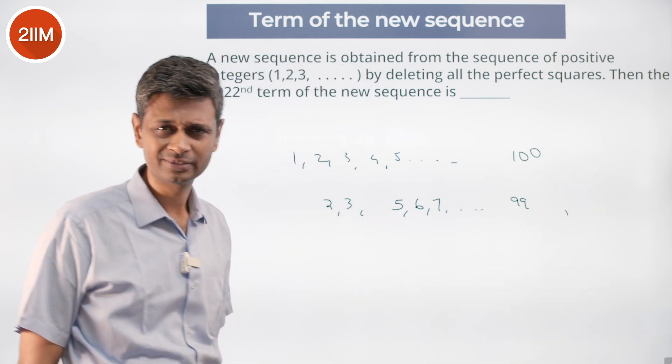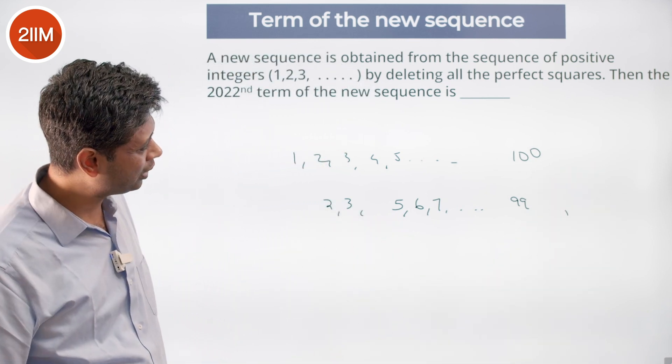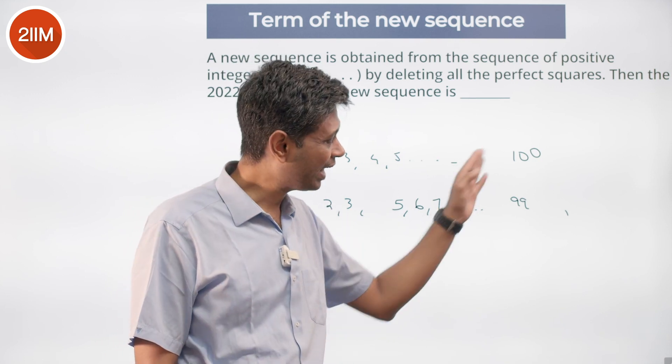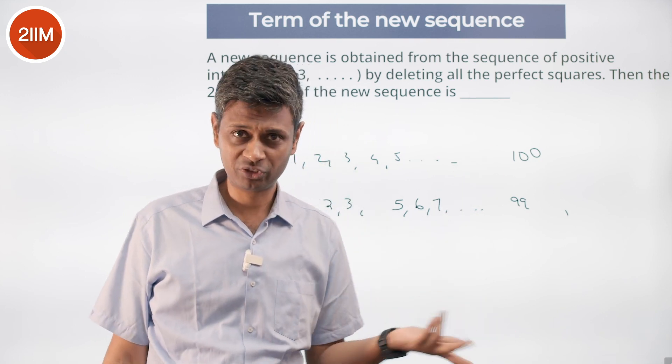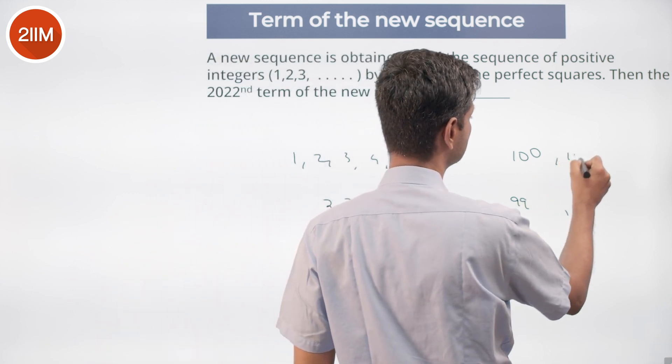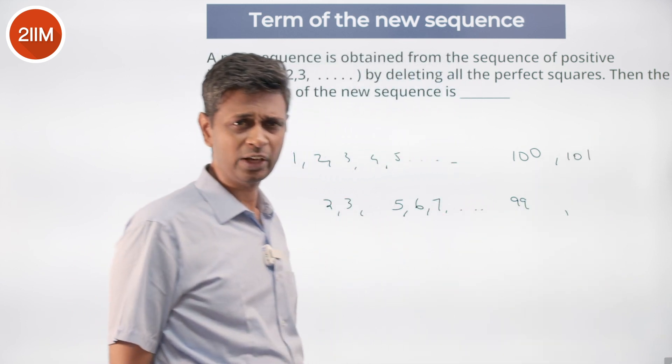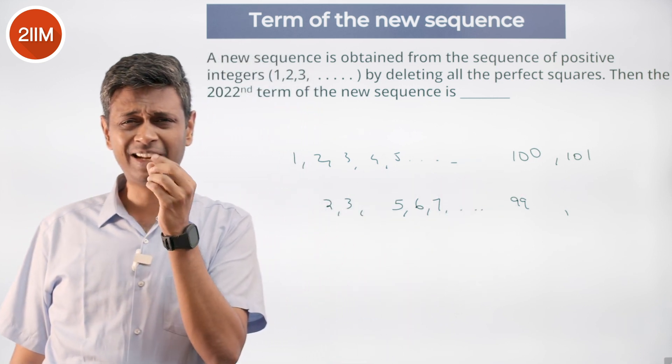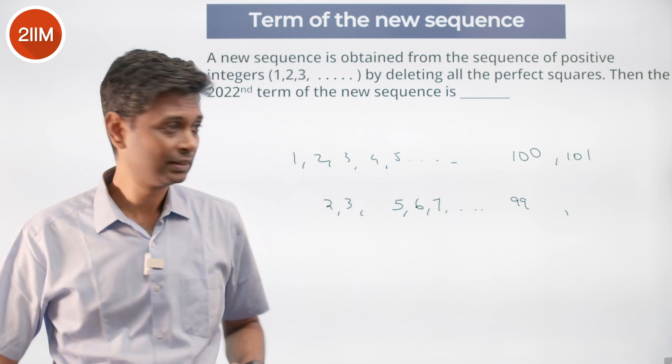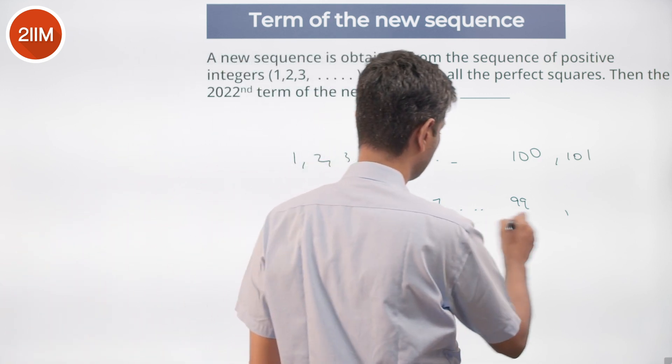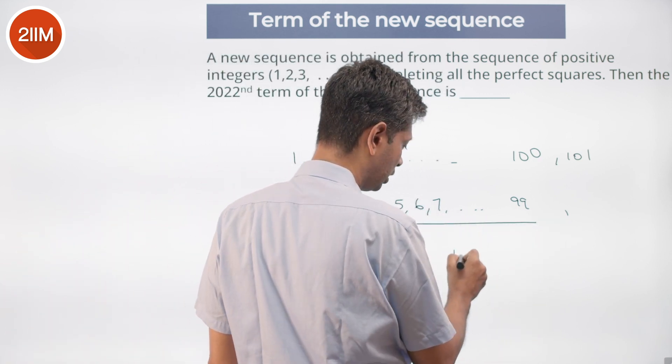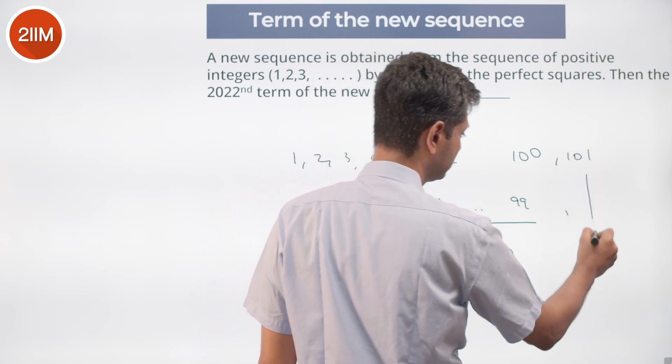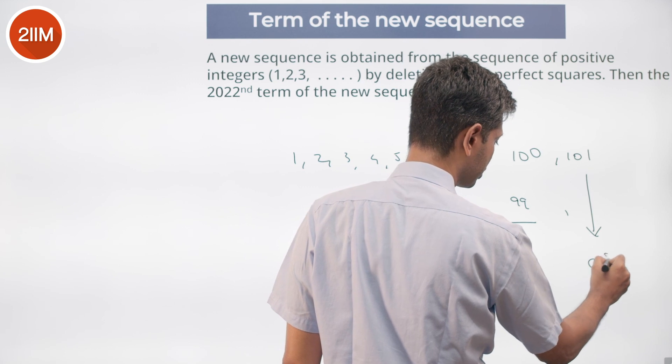If we go till number 100, we won't even have 100. 100 won't be there in my sequence. Therefore I am going to include 101. If we go and take all numbers till 101, till then there are 10 squares sitting there. How many numbers get used? 100 minus 10 equals 90 numbers get used. 101 is the 91st number.